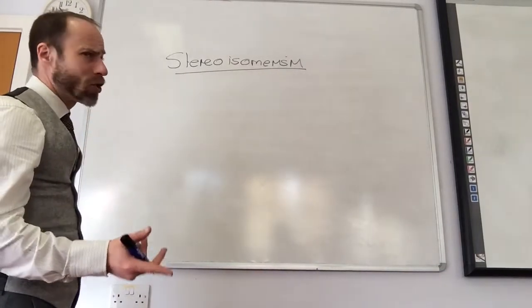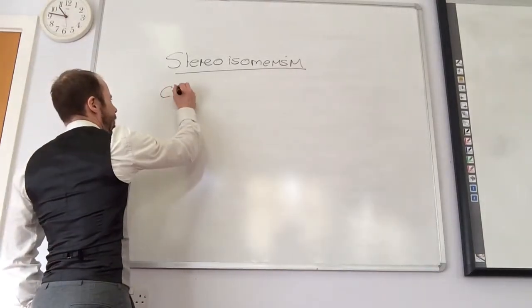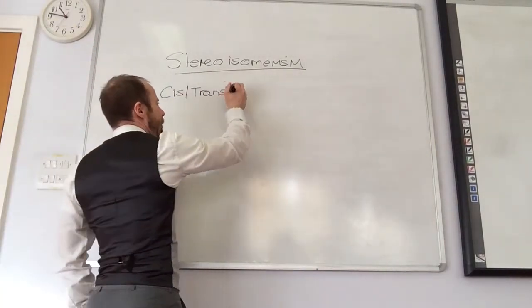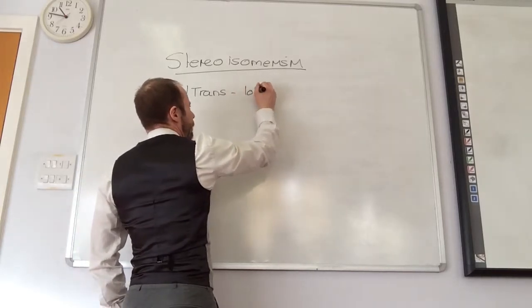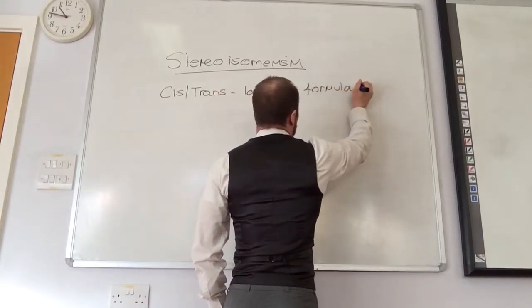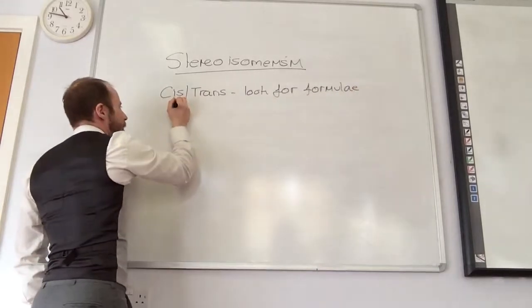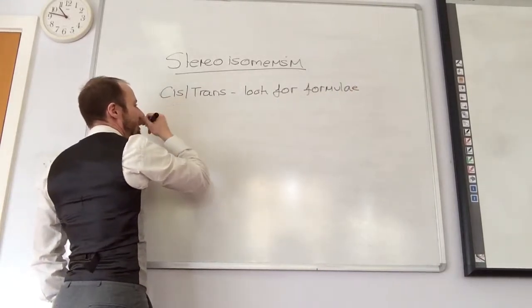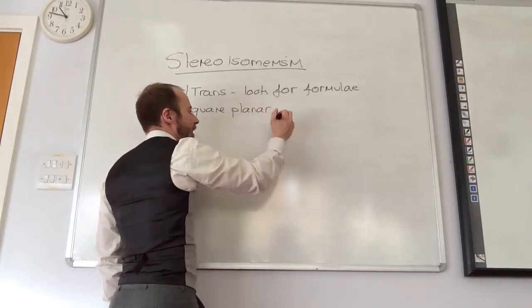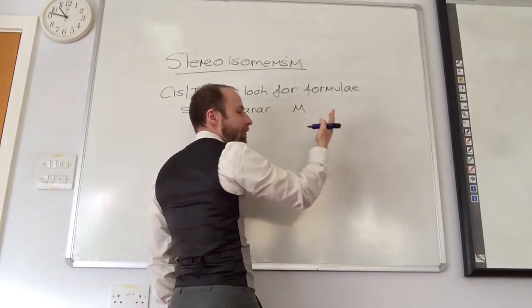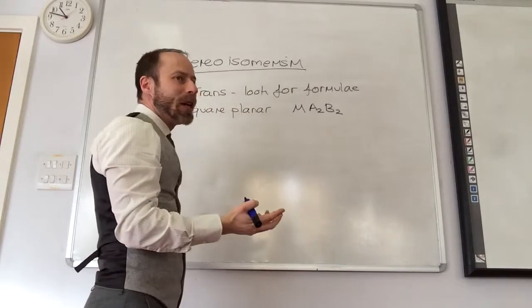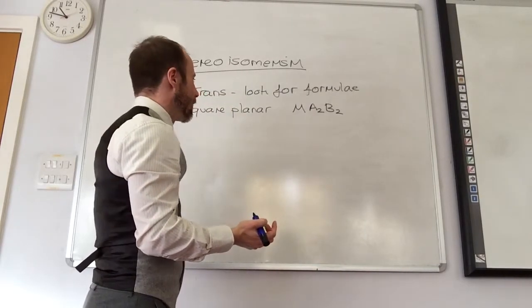Cis-trans is relatively straightforward. You've got to look for the following formulae. Let's have a think about square planar. So if you have a square planar complex which has the formula M, and then if I'm just going to put A2B2, so A and B are both monodentate ligands.